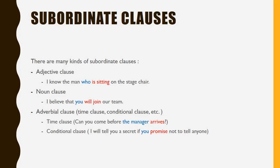There are many kinds of subordinate clauses: adjective clause, noun clause, and adverbial clause. Example of an adjective clause: 'I know the man who is sitting on the stage chair.' Example of a noun clause: 'I believe that you will join our team.' Example of a conditional clause: 'I will tell you a secret if you promise not to tell anyone' — that is a condition for me to tell you the secret.